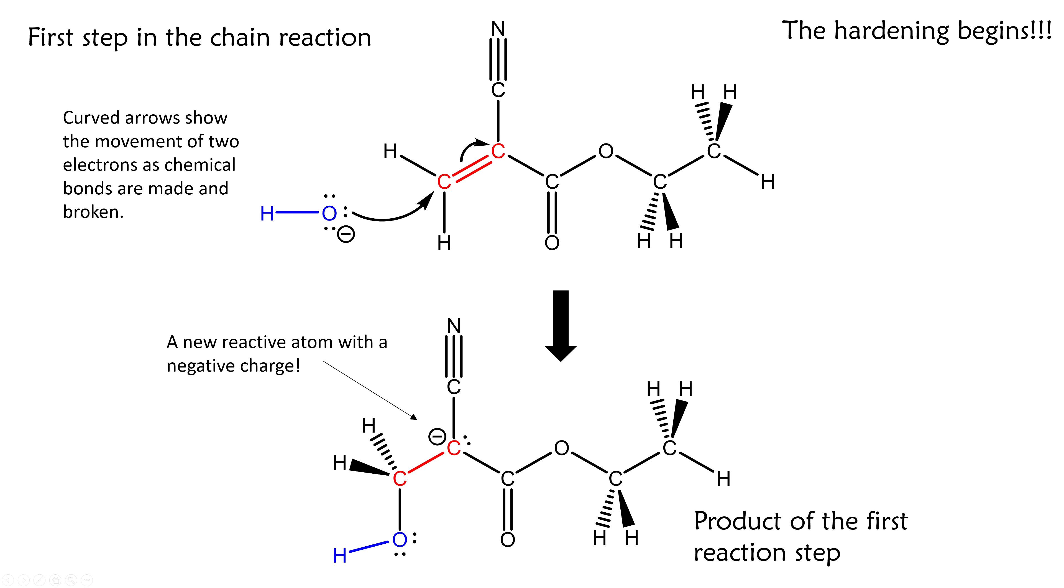Although we draw a full negative charge on the carbon atom, in reality that charge is more distributed over the rest of the ion. This was the first step in a nucleophilic chain polymerization reaction. This type of reaction mechanism is characterized by the movement of pairs of electrons from electron-rich reactants to electron-poor reactants.